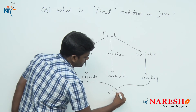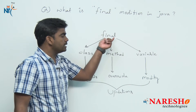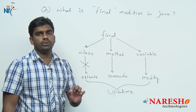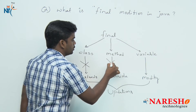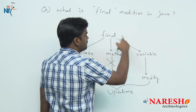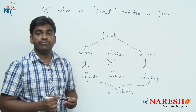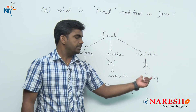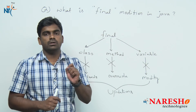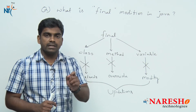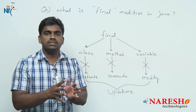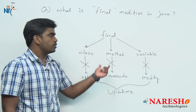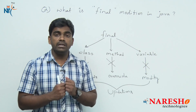But what final does is: if a class is final, you cannot extend it — it is not allowed. If a method is final, you cannot override it. If a variable is final, you cannot modify its value — it is fixed. No one can update the class, the method, or the variable; it is impossible. That is what we call the final modifier in Java — it simply restricts updation permissions. You cannot update a final object in any way, whether through a class, method, or variable.